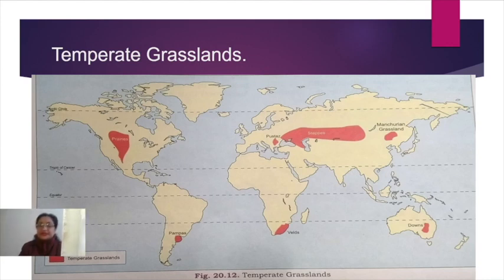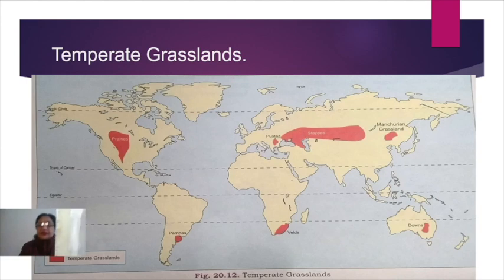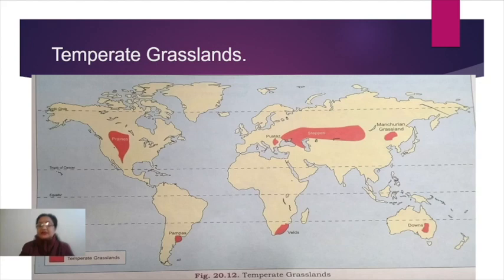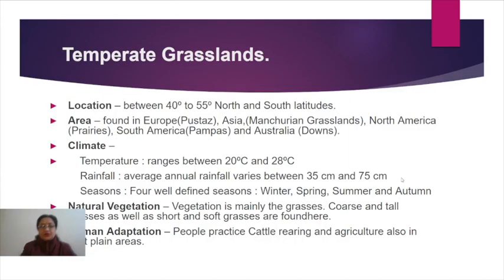In eastern Asia, temperate grasslands are known as the Manchurian grasslands, covering northwestern China and western Siberia. These are all the areas across continents covered by the temperate grasslands region.